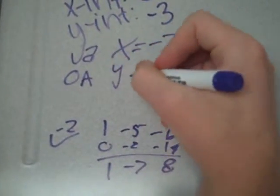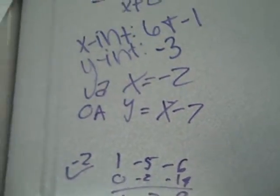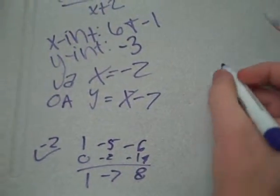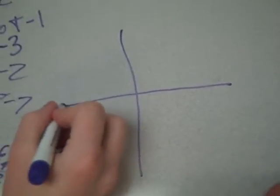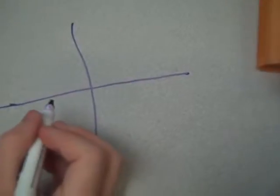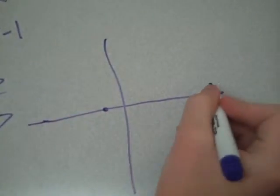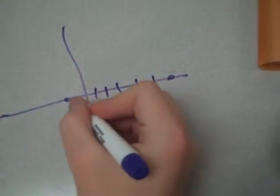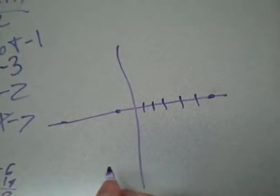And then you can put all that into your graph. First you can do the x-intercepts at 6 and negative 1. And then you do the vertical asymptote at x equals negative 2.